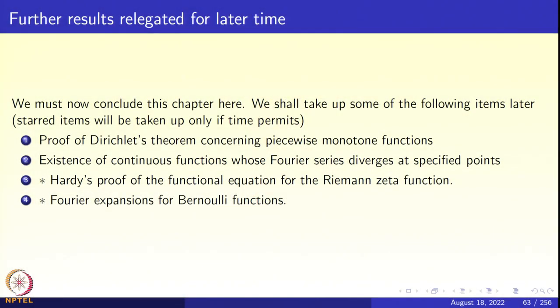We must close this chapter here. The proof of Dirichlet's theorem concerning piecewise monotone functions we shall prove later. The existence of a continuous function whose Fourier series diverges at specified points will be discussed later, as a consequence of the Baire category theorem or the Banach-Steinhaus theorem. The starred items — Hardy's proof of the functional equation for the Riemann zeta function and Fourier expansions for Bessel's functions — will be taken up if time permits. Thank you very much.